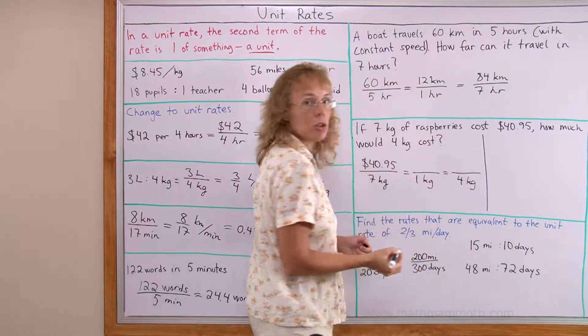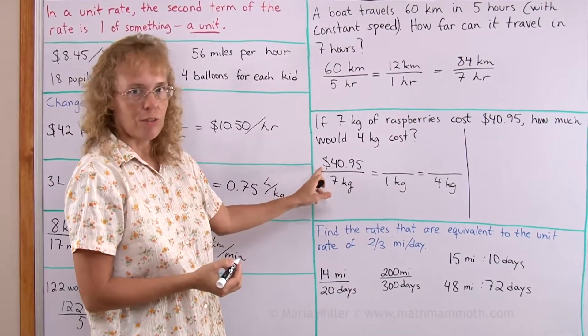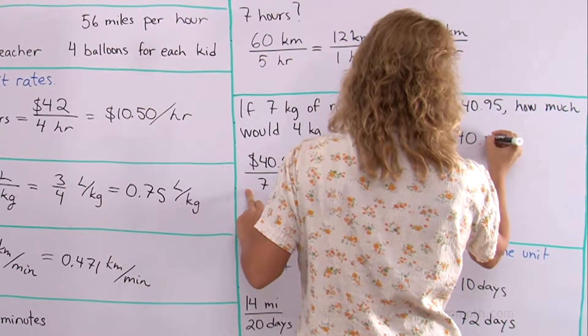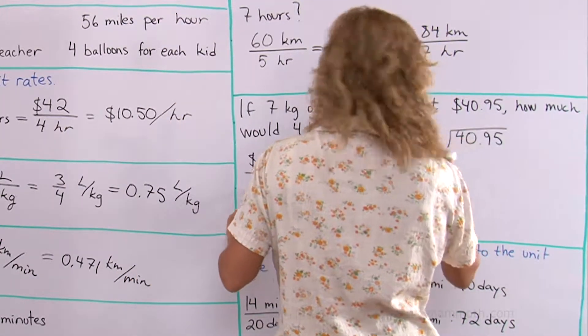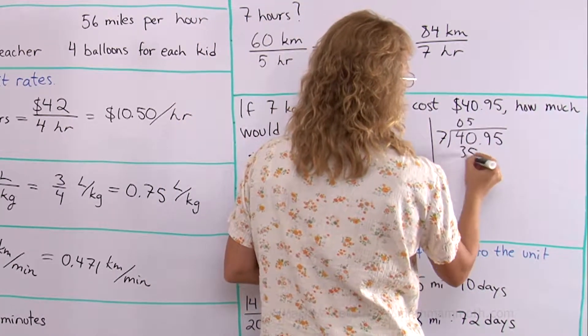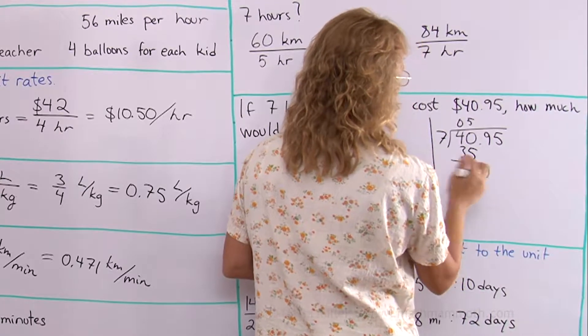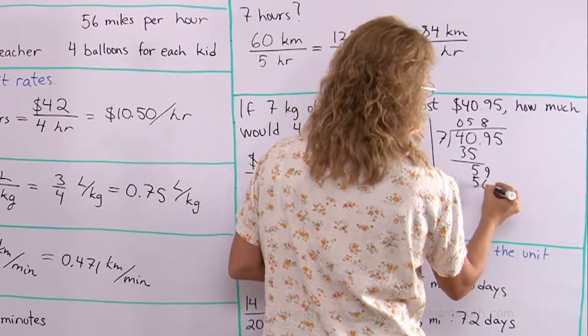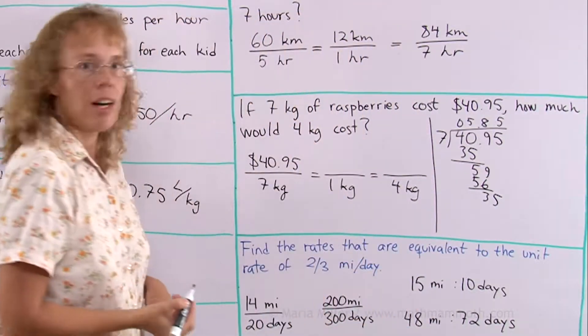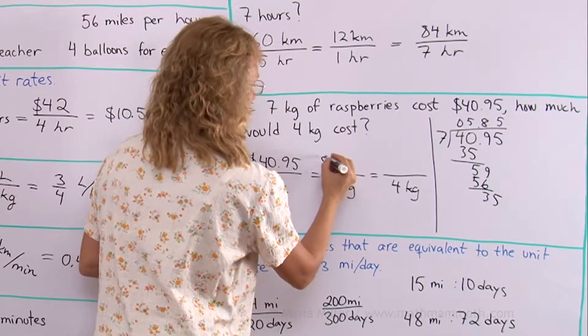Now this time I am going to use long division for this division here. 40.95 divided by 7. 7 goes to 40, 5 times. And 59 goes 8 times. And then here 5. So we get $5.85 for the unit price.